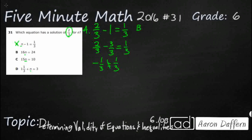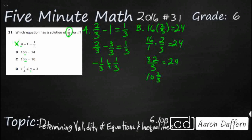Let's take a look at option B. I've got 16n, so I'm going to put 16 times 2 thirds and see if that equals 24. I'll make 16 into a fraction: 16 over 1 times 2 over 3. Going straight across: 16 times 2 is 32, and 1 times 3 is 3. Does 32 thirds equal 24? No — that's 10 and 2 thirds. It does not equal 24, so that is problematic.